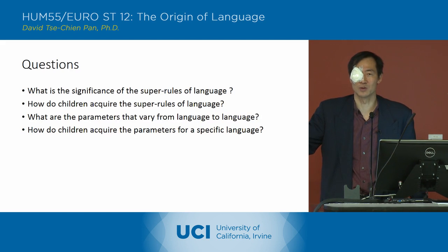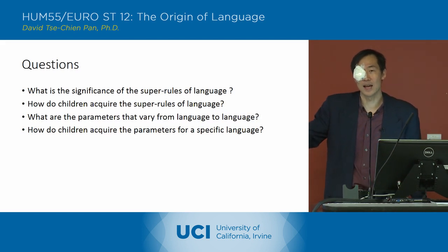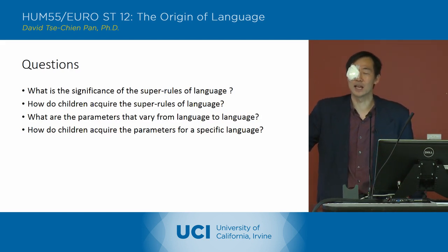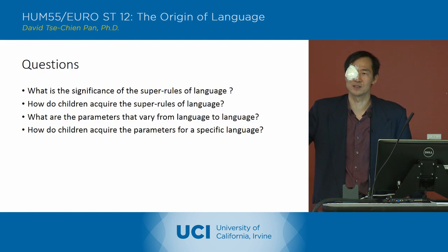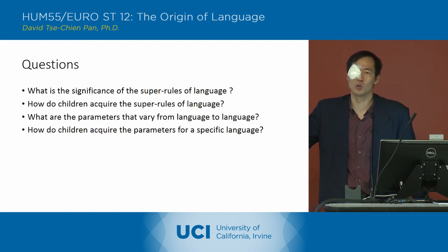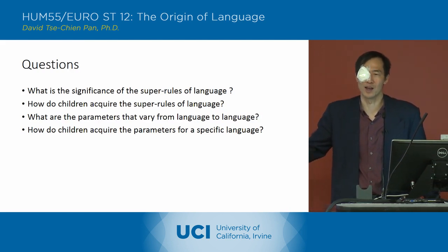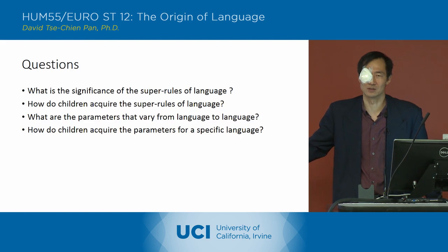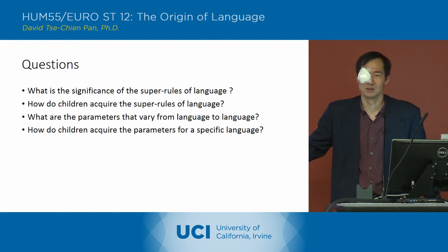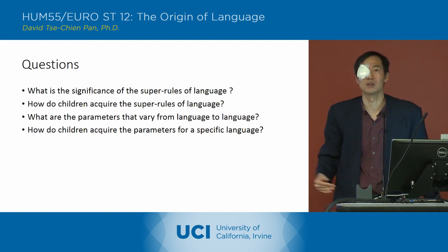If it's head-last, you wouldn't say 'gave the voters a surprise.' The sentence would instead go 'the voters a surprise gave' — and that would be the word order you have in Japanese.